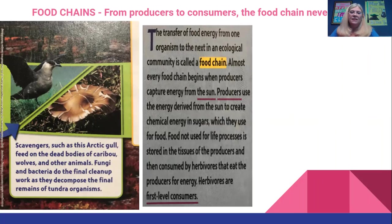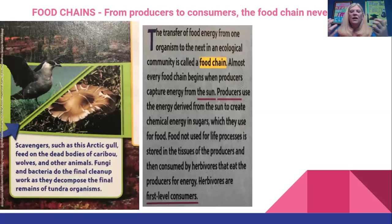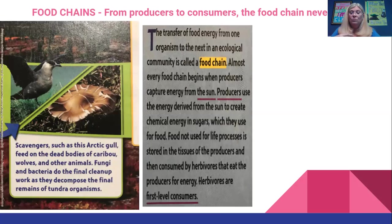Every food chain begins when a producer gets energy from the sun. The producer creates chemical energy into sugars that are used for food. Food not used for life processes is stored in the tissues of the producer and then it is consumed by herbivores that eat the producers for energy.